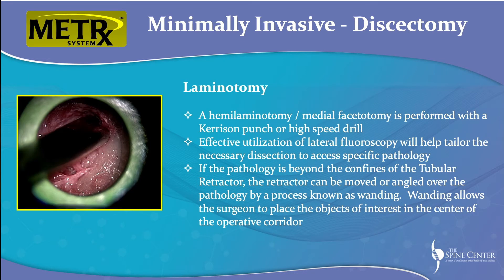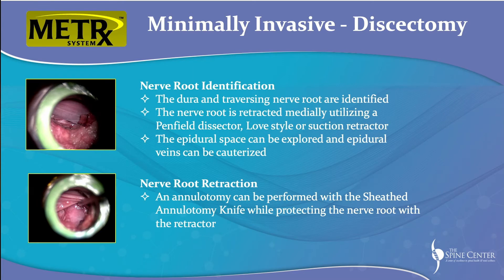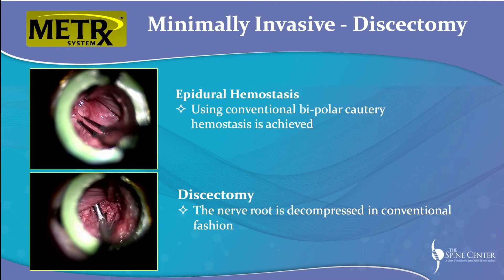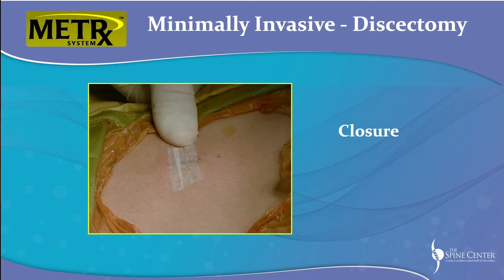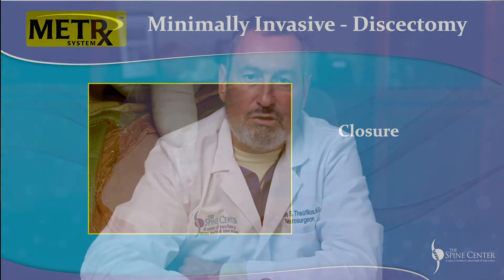We can remove the bone we need to and get the disc herniation out. For removing the disc herniation, I use a laser because it evaporates the disc — we're evaporating the jelly that has squirted out, not removing the jelly inside the donut. I use laser because evaporating creates a much cleaner field. Then we do a closure, and our incisions are usually very small depending on the dilator size. When we're done, we just pull the dilator out and the muscles return to normal.